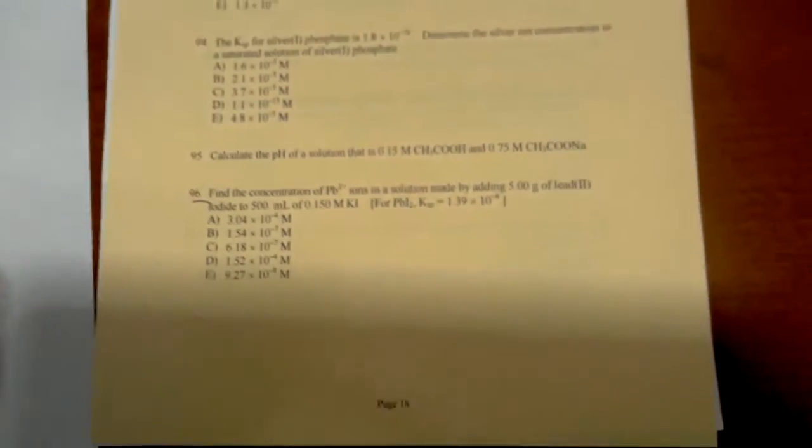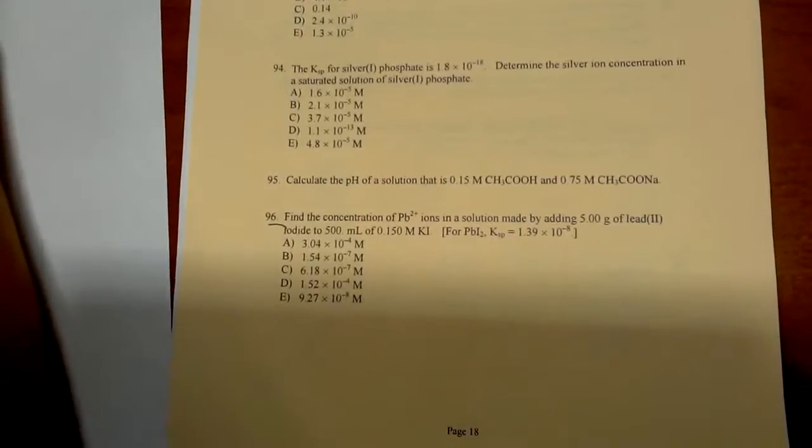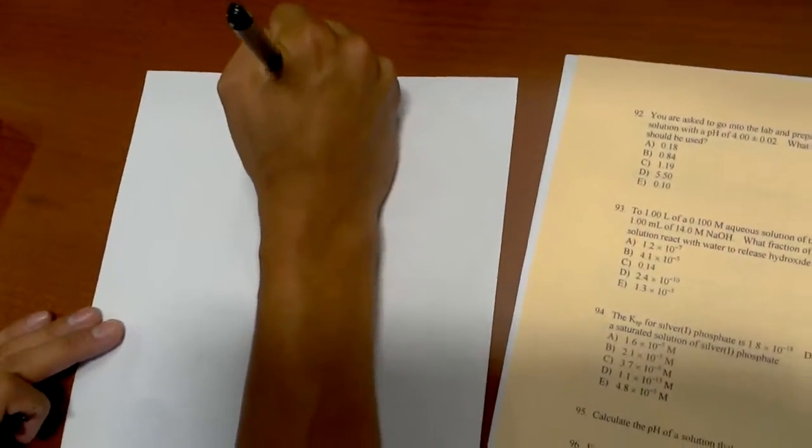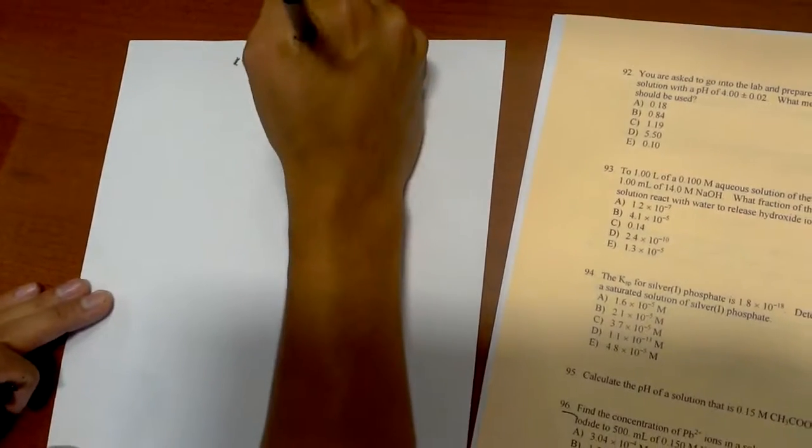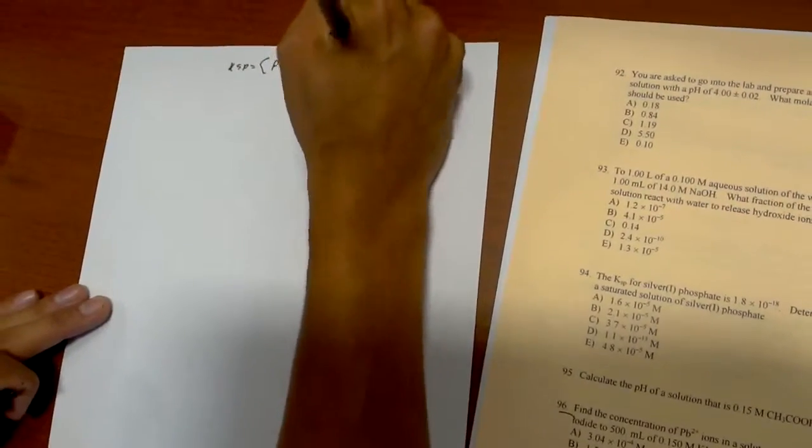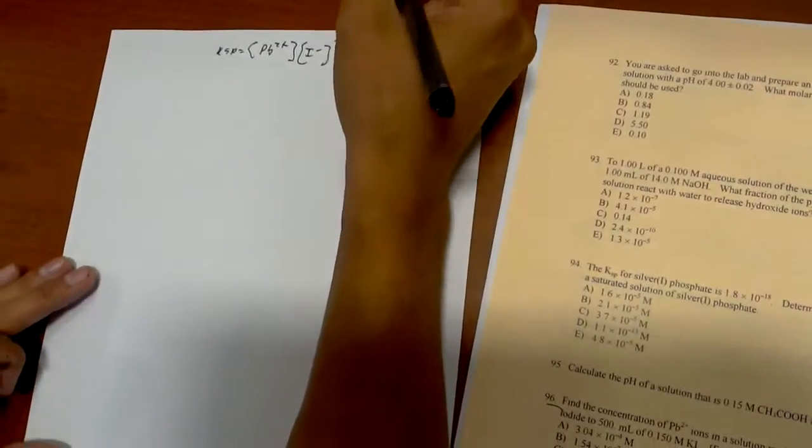So if we write out this equation, Ksp equals Pb²⁺ times I⁻, and because there are two mols, we're going to write it to the power of 2 at the top.